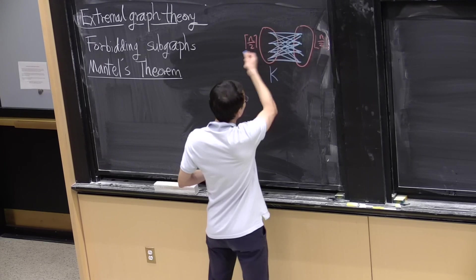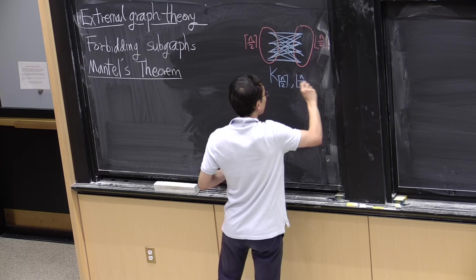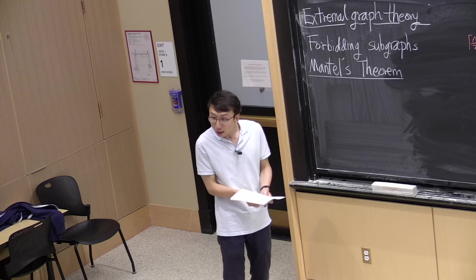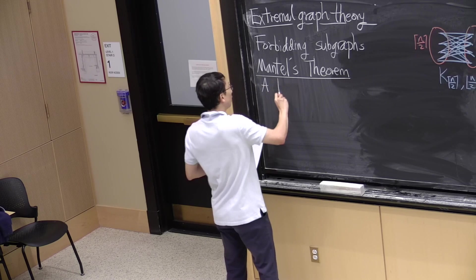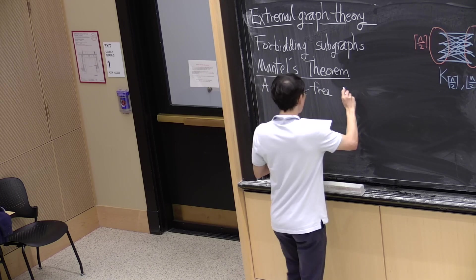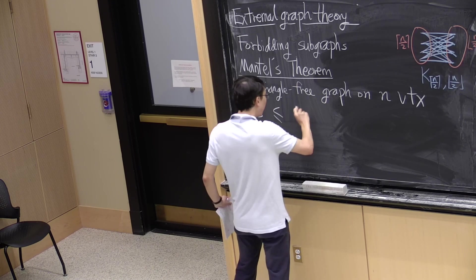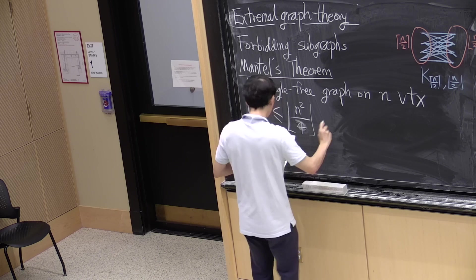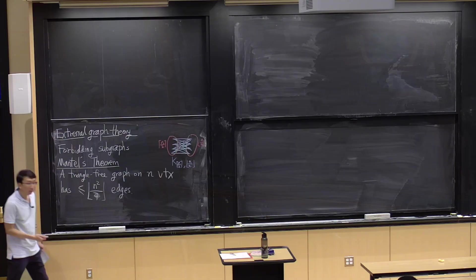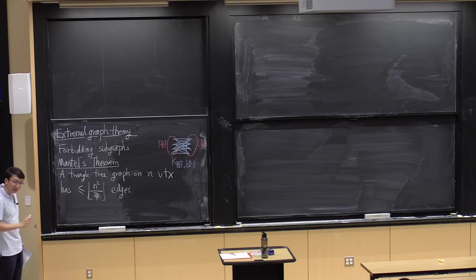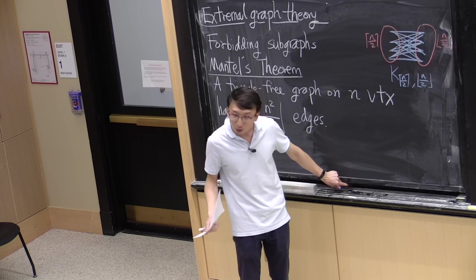For these partitions, we denote complete bipartite graphs like that. Mantel's theorem tells us that this graph among triangle-free graphs has the most number of edges. The number of edges is n squared divided by 4, rounded down. From this example, this bound is tight. So Mantel's theorem gives us a completely satisfactory answer to the question of what's the maximum number of edges in a graph without triangles.